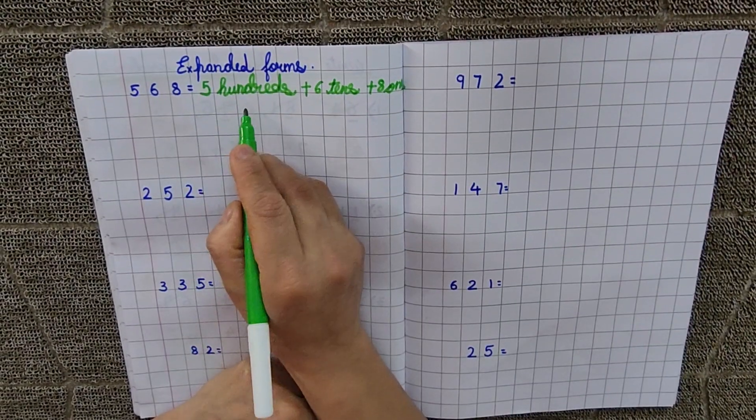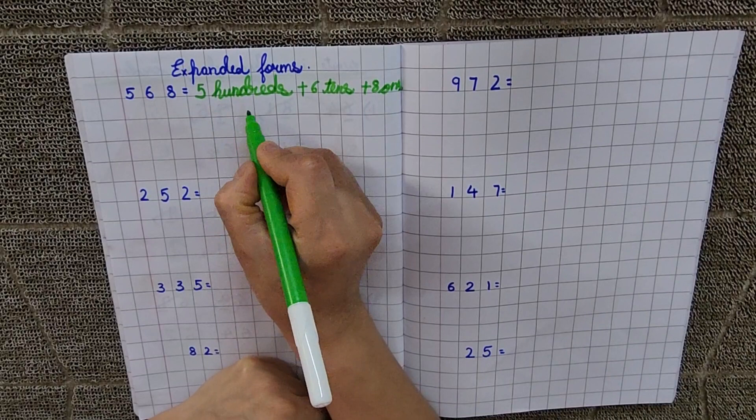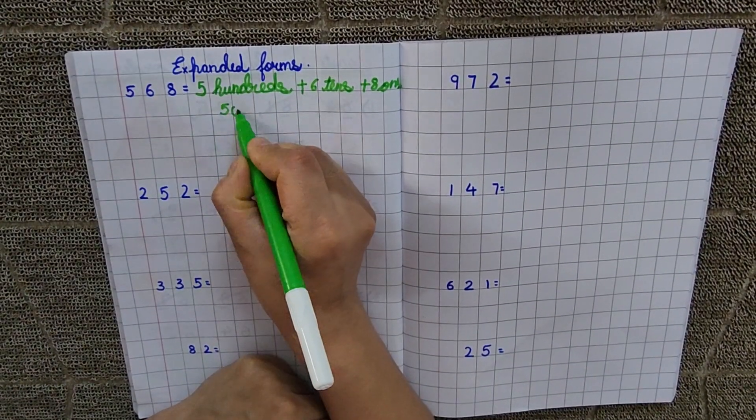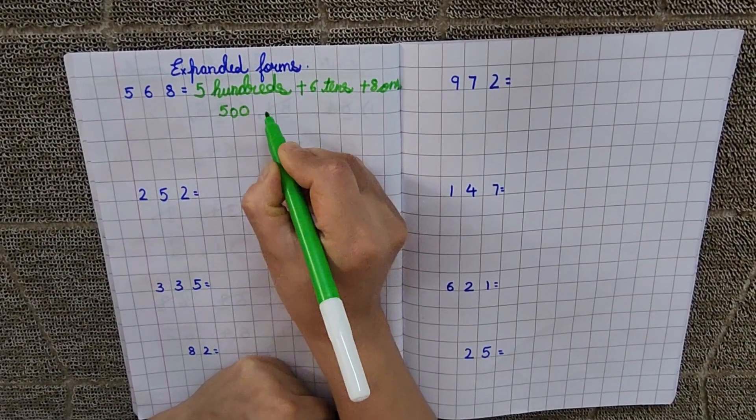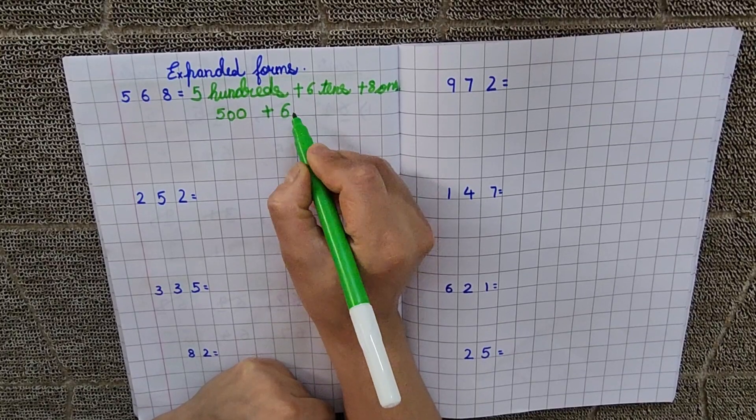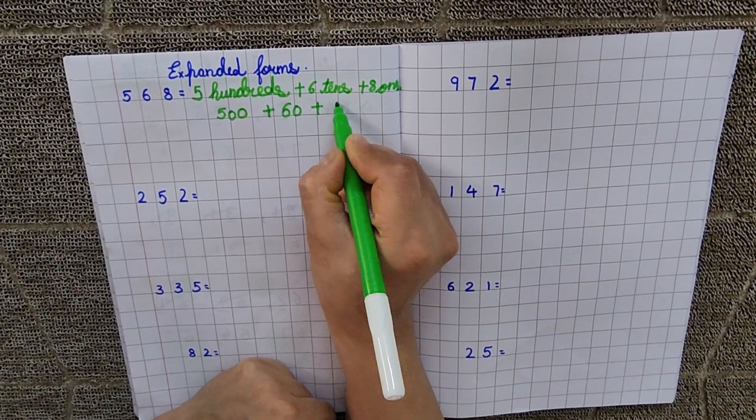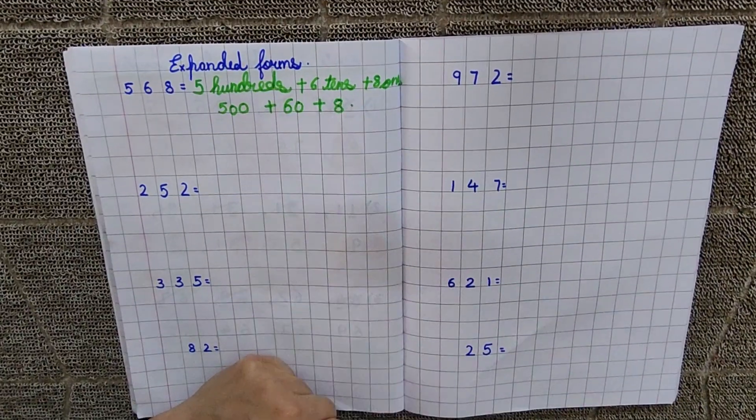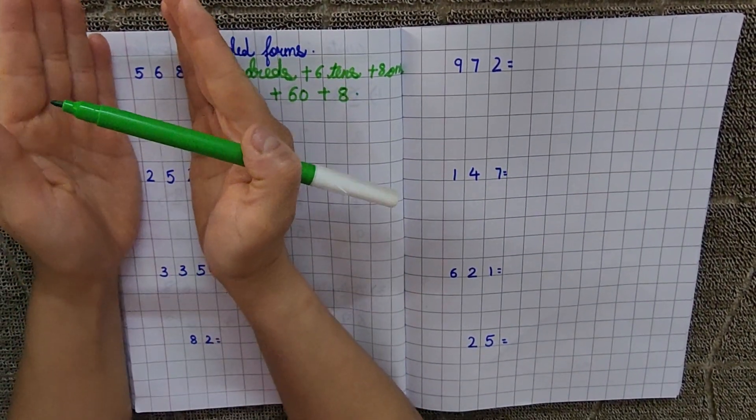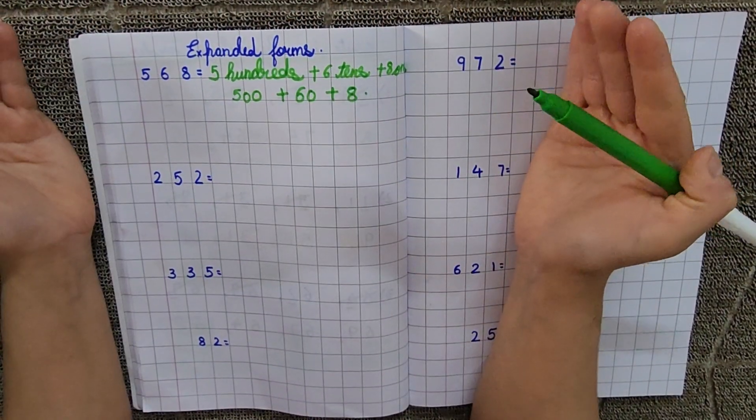Now, abhaam iski zeros lagayenge. How many zeros of 100? 2. So, 500 plus, tens ki kitni zeros hoti hai? 1, 60 plus 8. So, this is the expanded form. Humne itne se number ko humne itna big kar liya, right? Humne expand kar liya.